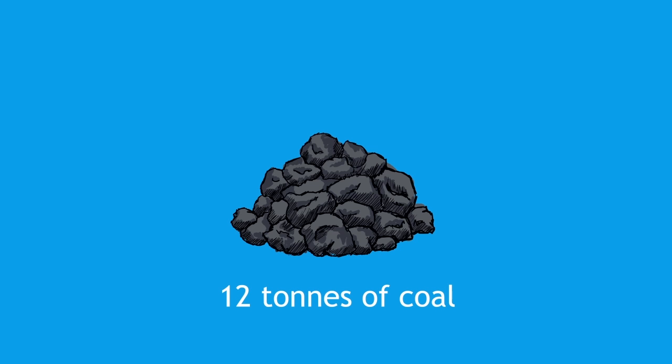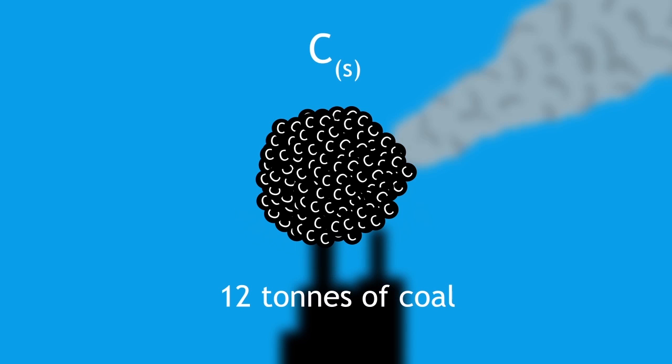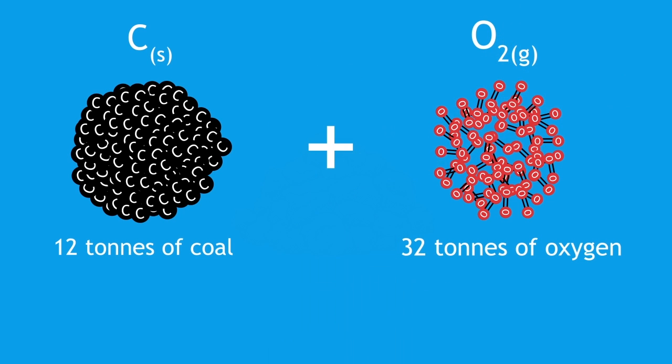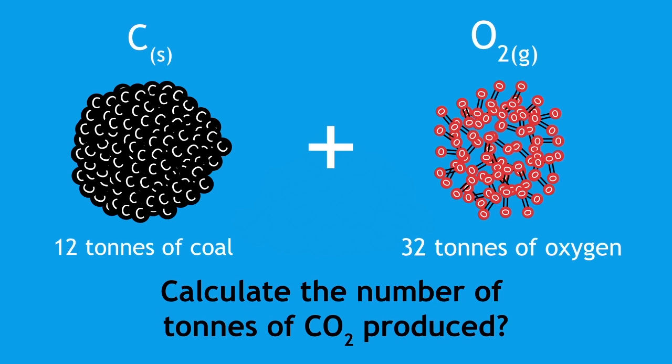Let's think about this. If you combust 12 tonnes of coal, which is mainly carbon, with 32 tonnes of oxygen in a power station, you should be able to calculate the number of tonnes of CO2 produced. Pause the video and think about this. Continue when ready.